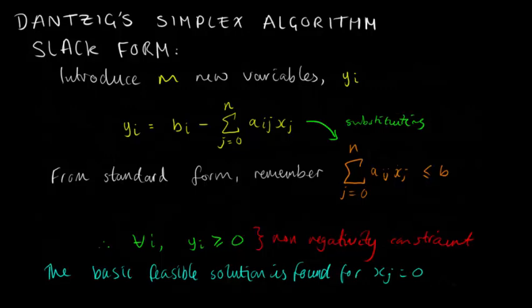The last point to make about slack form is we also introduce a new variable for the objective function. We will refer to all of these new variables as the basic variables, and all of the original variables as the non-basic variables.